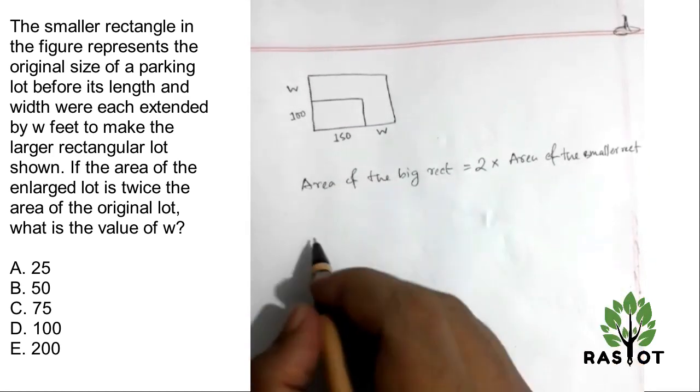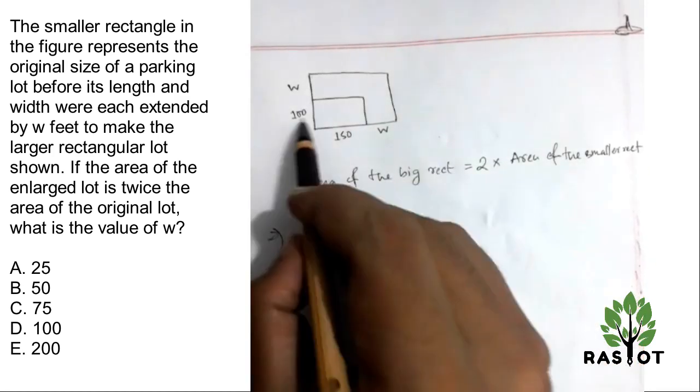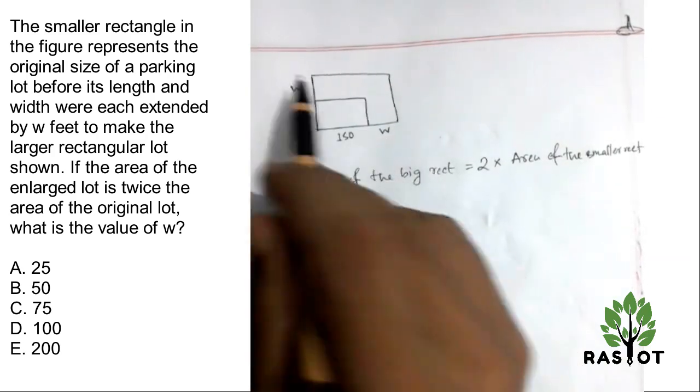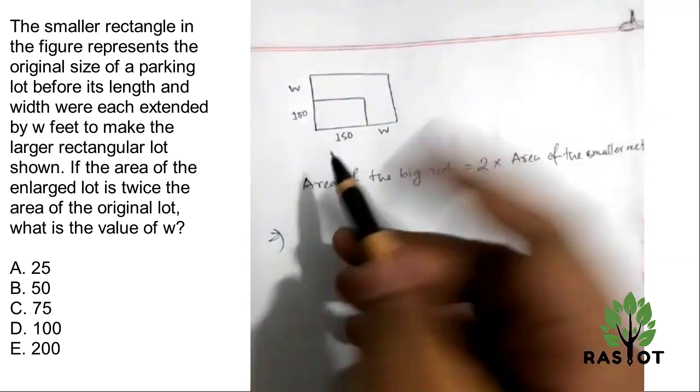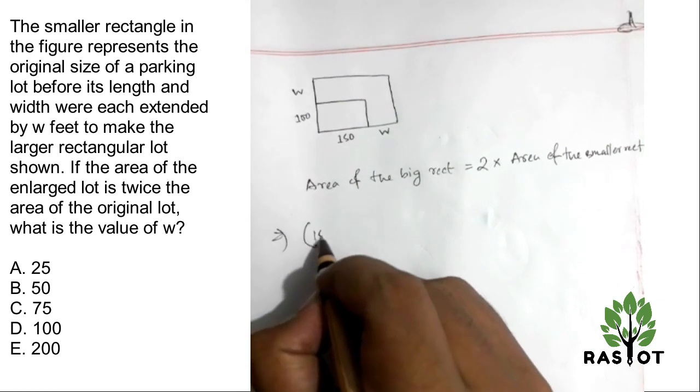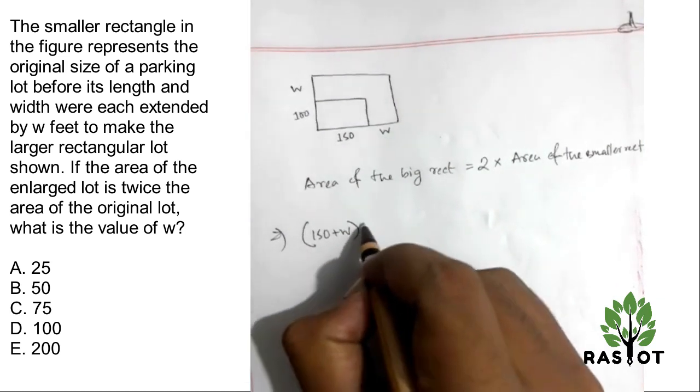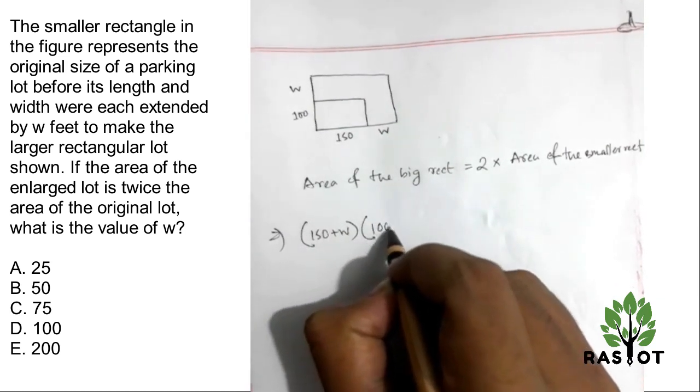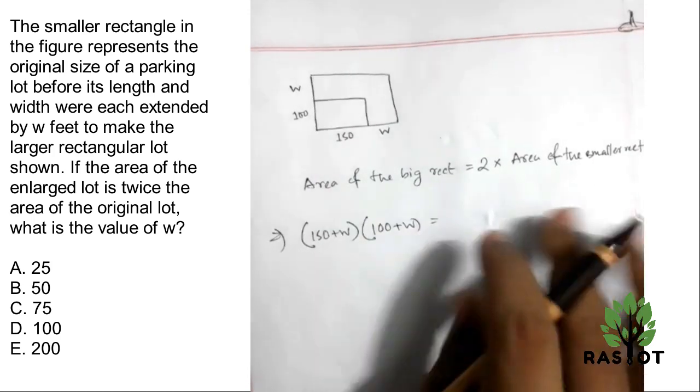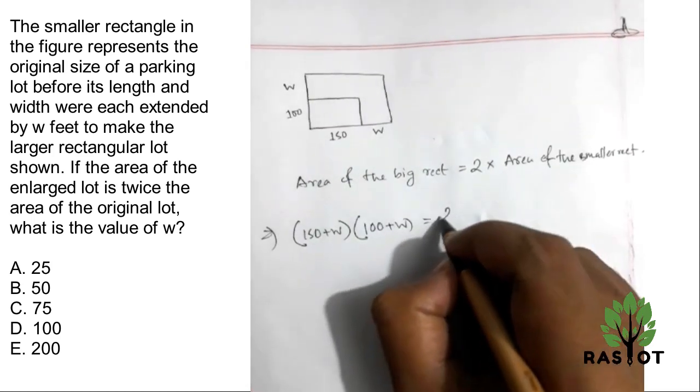Okay, so now you can see the area of the big rectangle. The length and breadth of the rectangle, so here it is: 150 plus w into 100 plus w is equal to twice of...